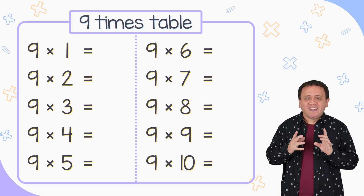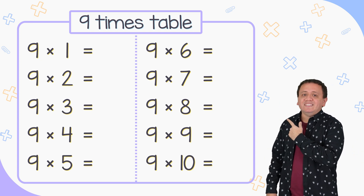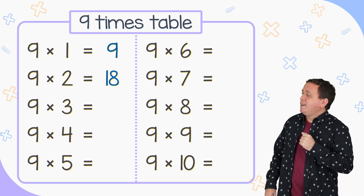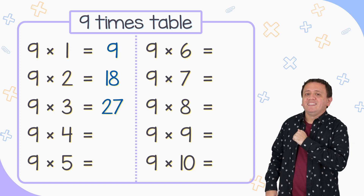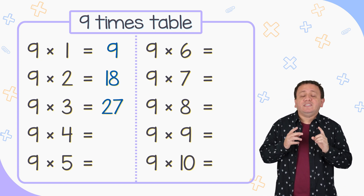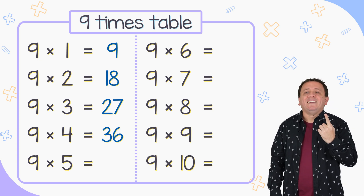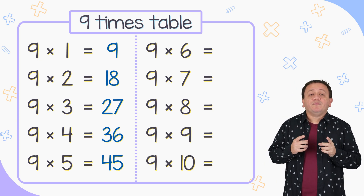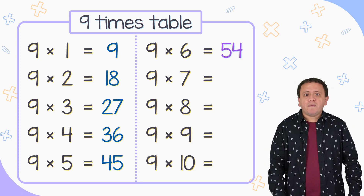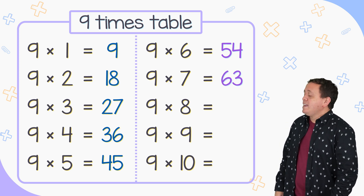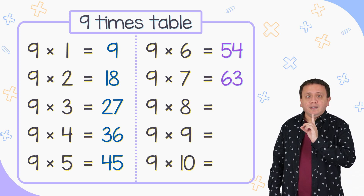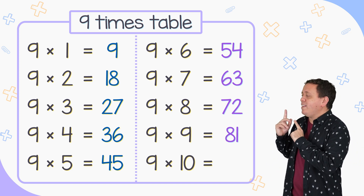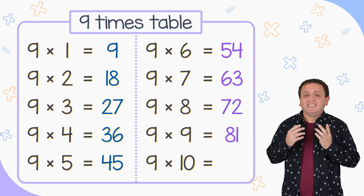The 9 times table might be difficult at the beginning, so pay attention please. 9 times 1 equals 9. 9 times 2 equals 18. 9 times 3 equals 27. 9 times 4 equals 36. 9 times 5 equals 45. 9 times 6 equals 54. 9 times 7 equals 63. 9 times 8 is 72. 9 times 9 is 81 and 9 times 10 is equal to 90.